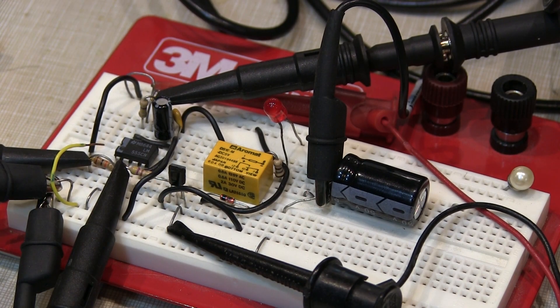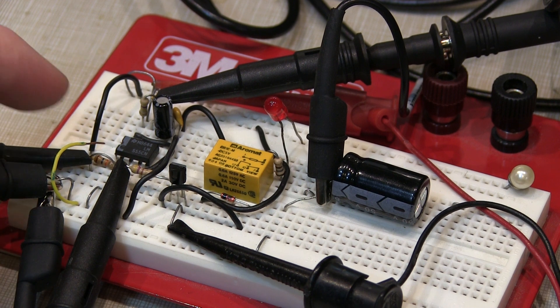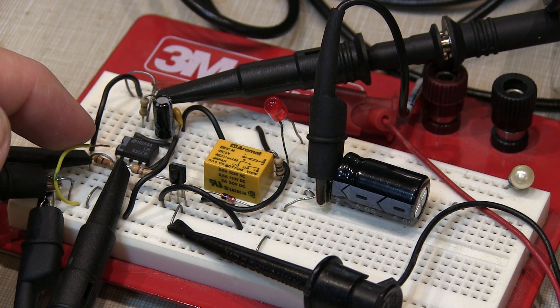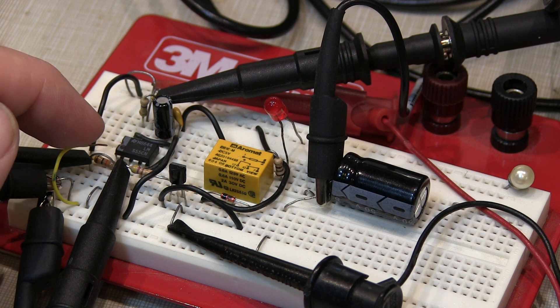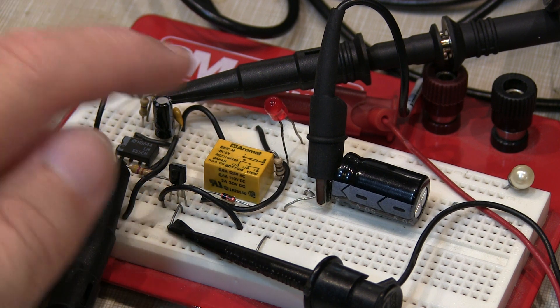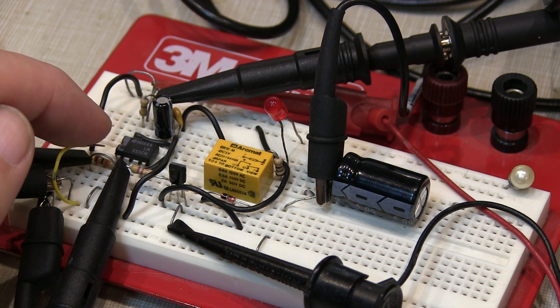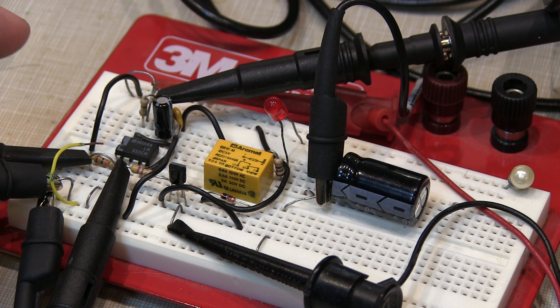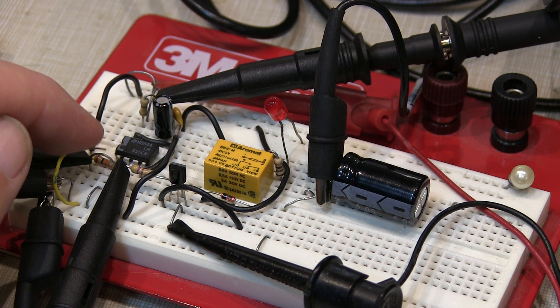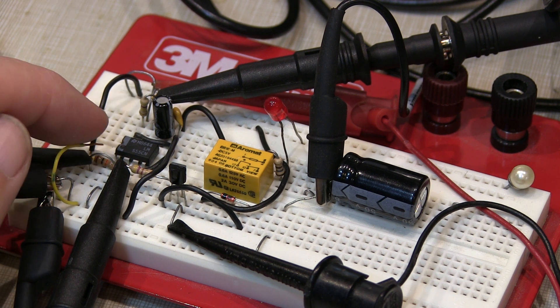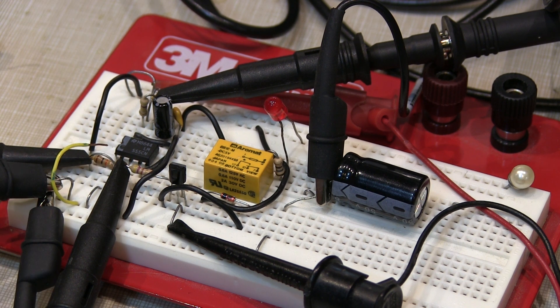So I've built up the circuit on the breadboard here. I can simulate the loss of that 5-volt signal by shorting this wire to ground. And when I do that, we can hear the relay click, and I'm just lighting up an LED on the other side of the relay to indicate that the relay is closed.